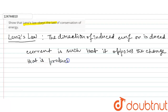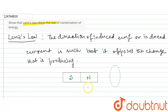The induced current opposes the change to the opposite. The induced current is such that we will see the magnet draw.